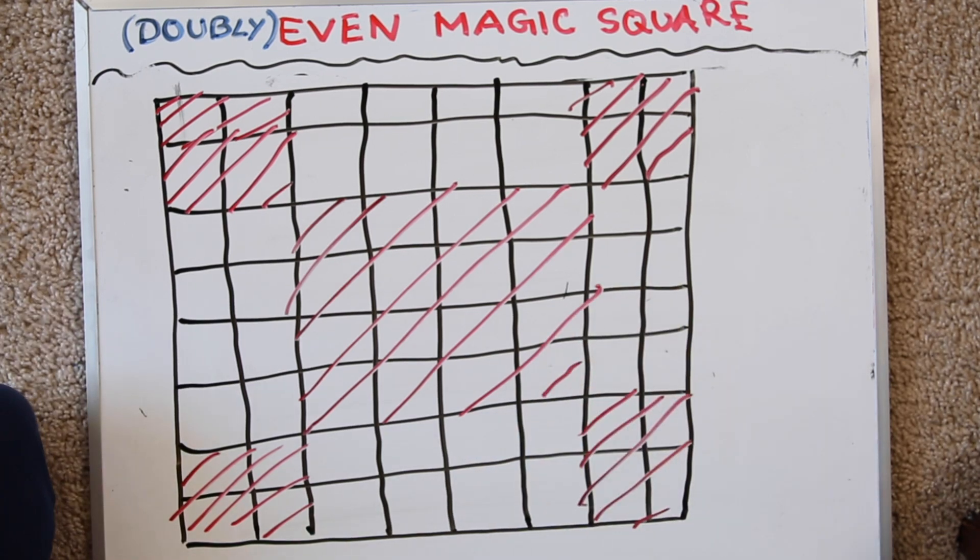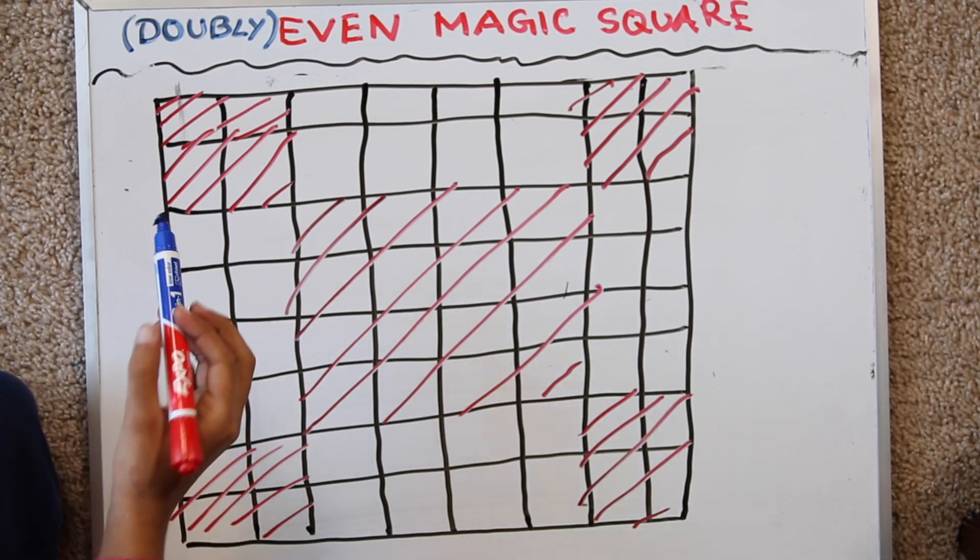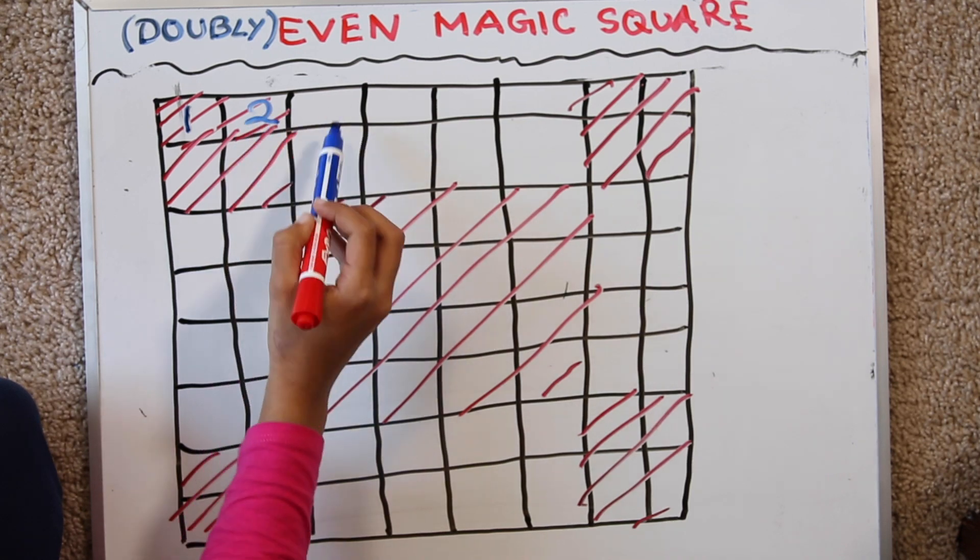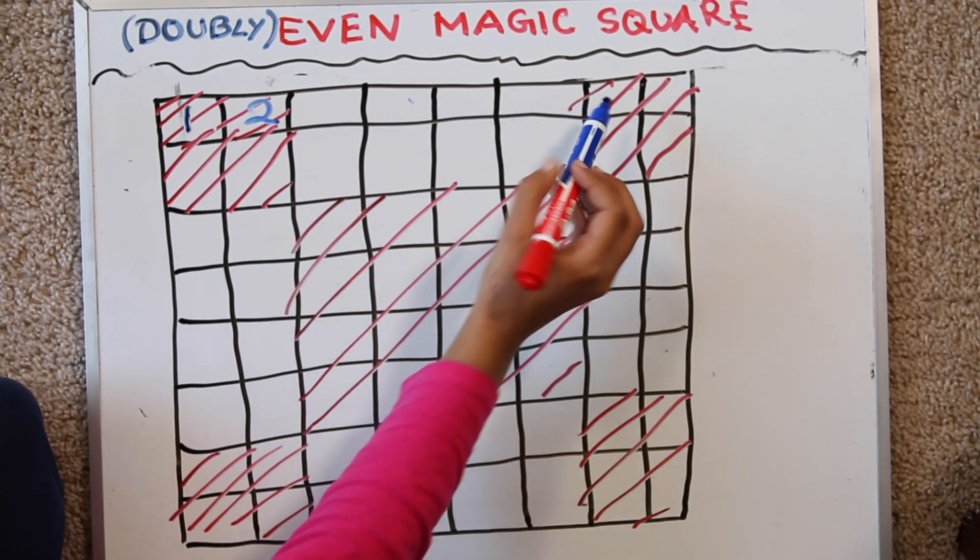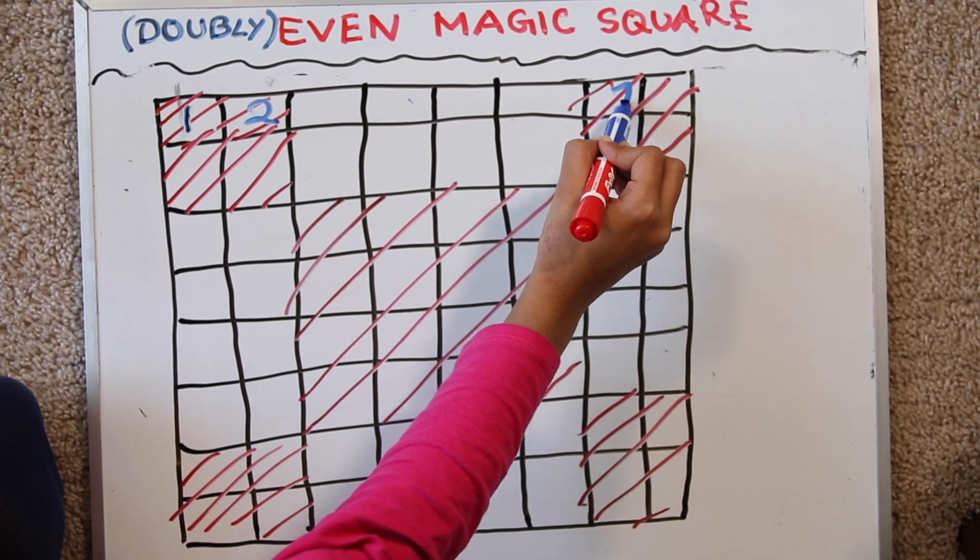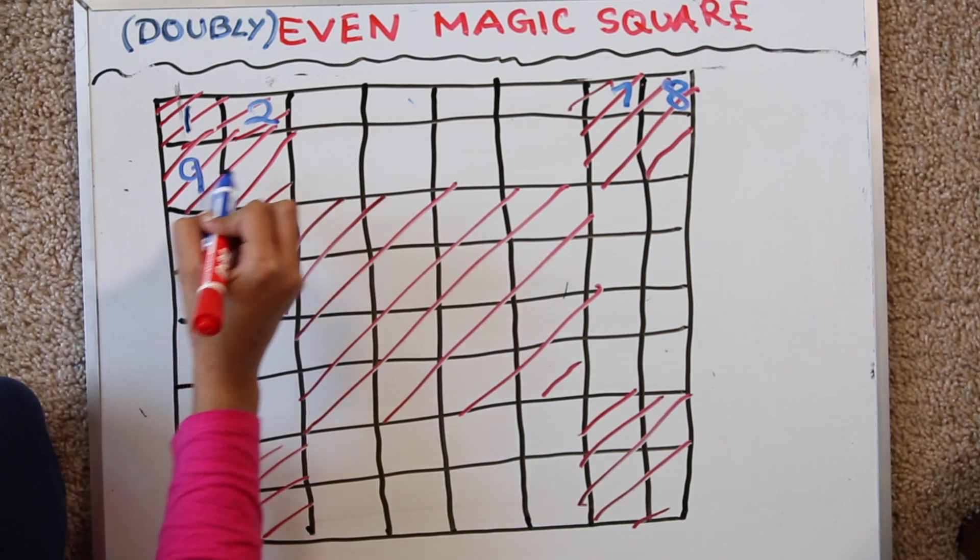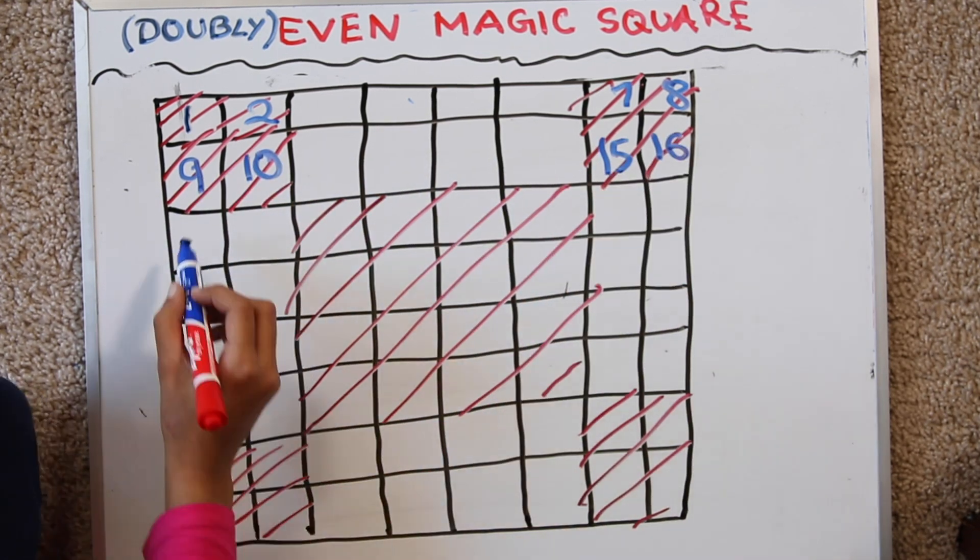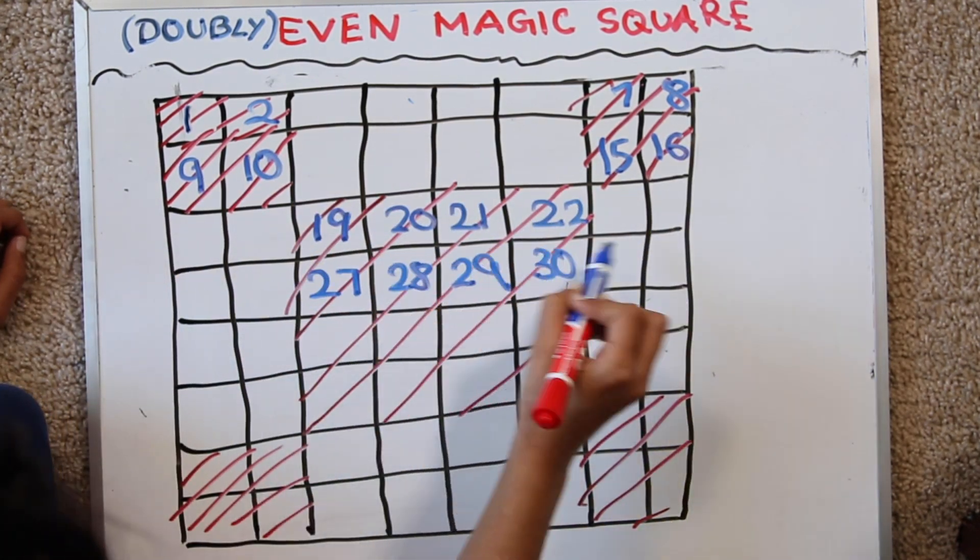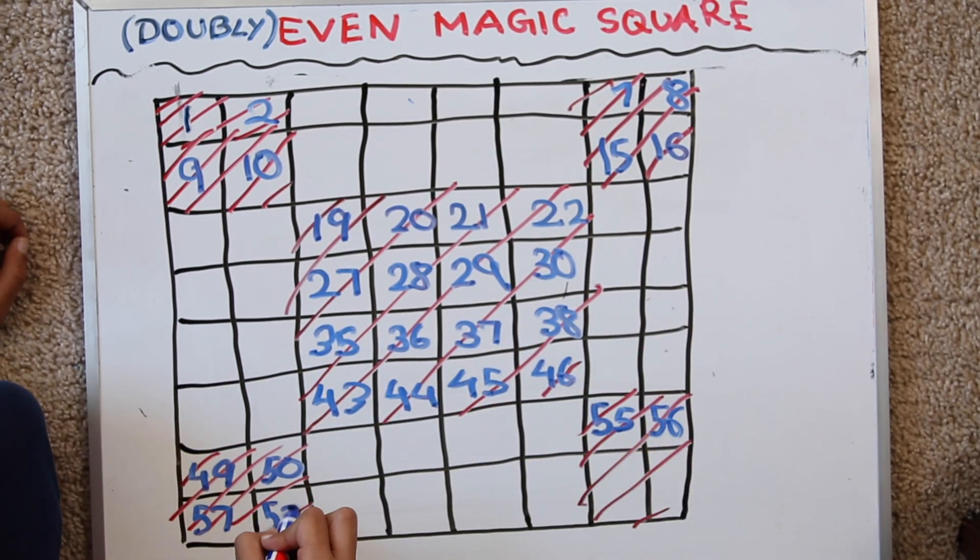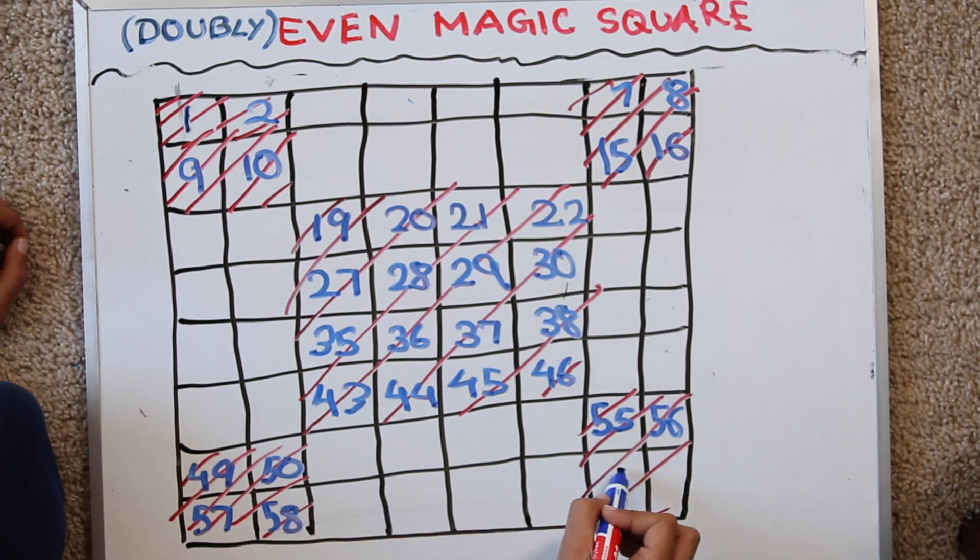Now let's move on to our second step which is forward. So let's start with 1 again. This would be 1. This would be 2, 3, 4, 5, 6, 7, 8, 9, 10, continuing through the grid counting and filling shaded squares up to 58, 59, 60, 61, 62, 63, 64.